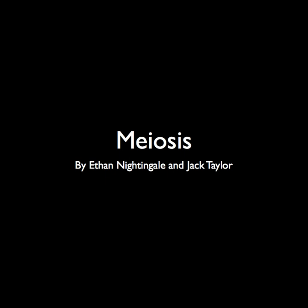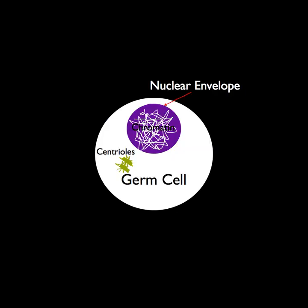The Stages of Meiosis by Ethan Eingale and Jack Taylor. Meiosis, or reduction division, begins with a simple germ cell.